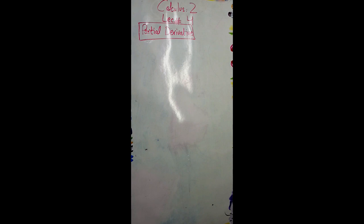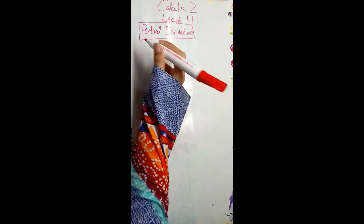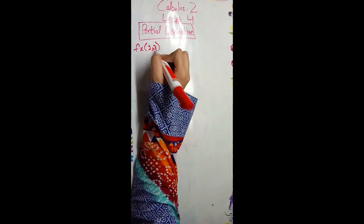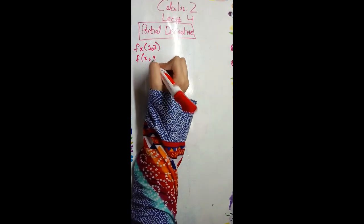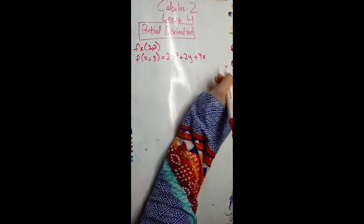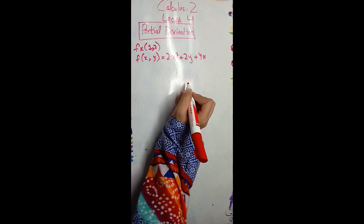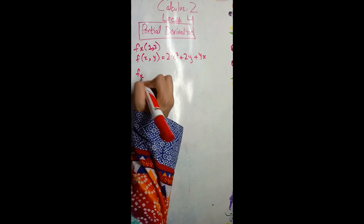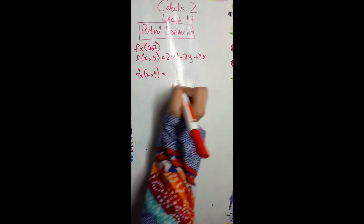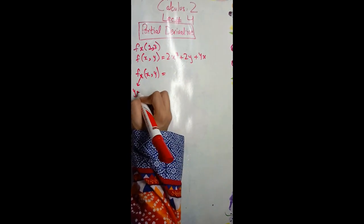In today's lecture we will study partial derivatives. Basically, in partial derivatives, when we take the derivative with respect to x, we will take y as a constant, and while taking the derivative with respect to y, we will take x as a constant. Our first example is to find f_x(1,3), where f(x,y) = 2x³ + 2y + 4x.